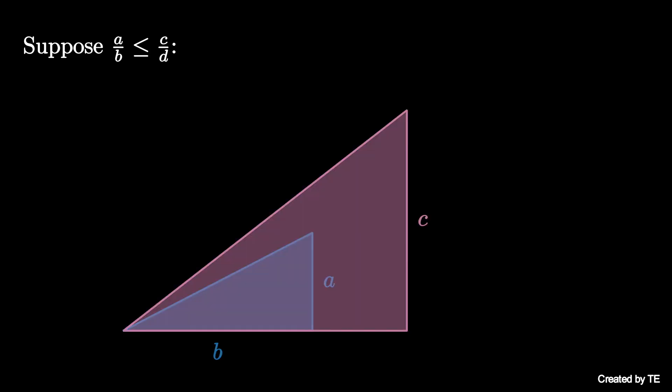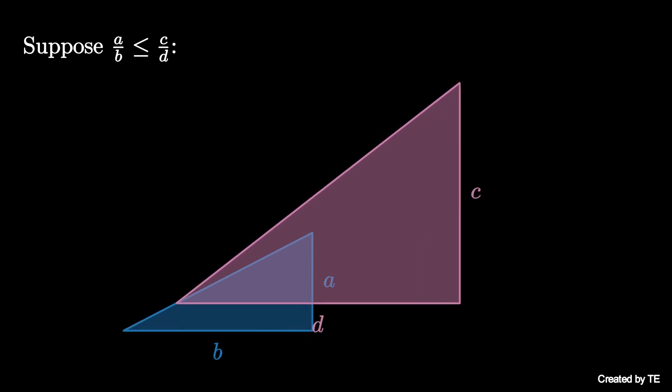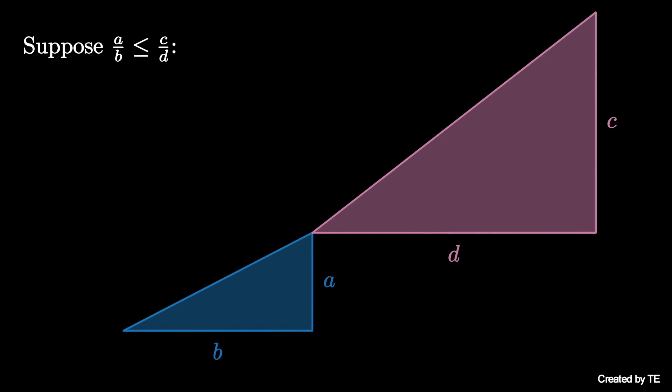and the inequality means that the slope of the hypotenuse of the triangle with legs A and B is less than or equal to the slope of the hypotenuse of the triangle with legs C and D.